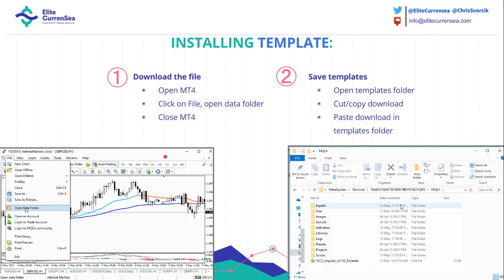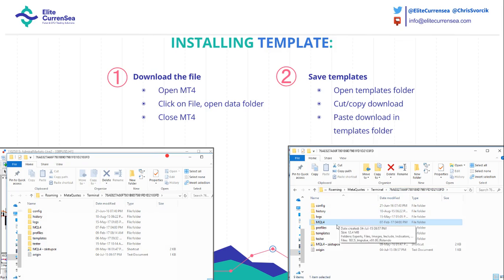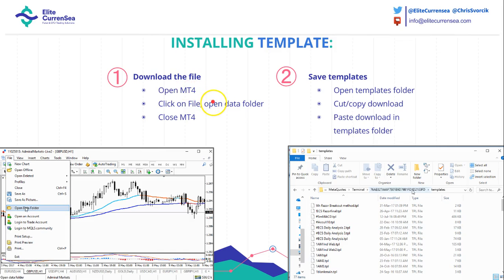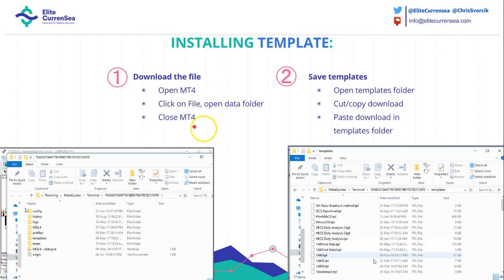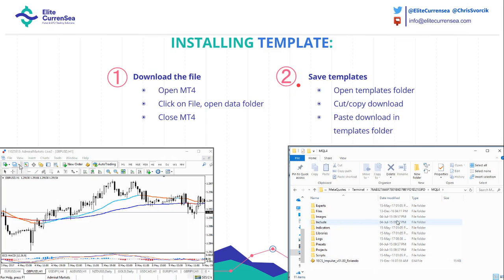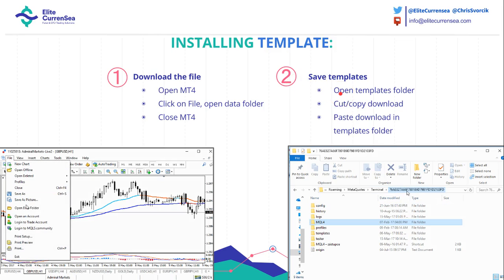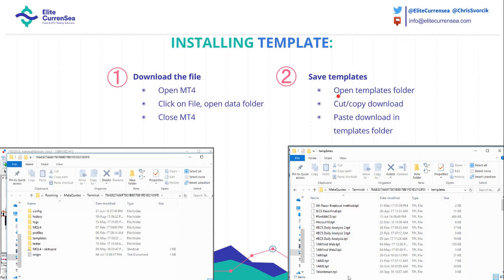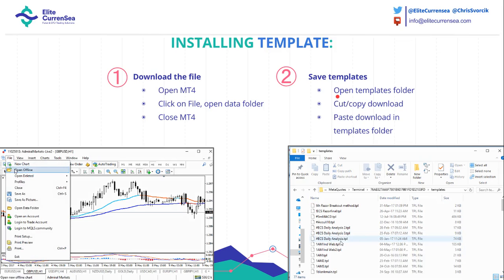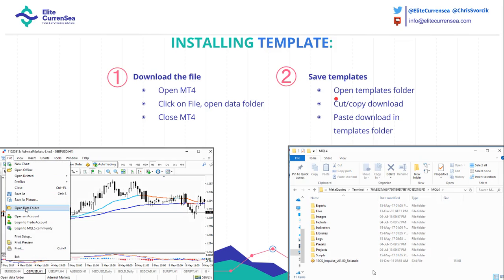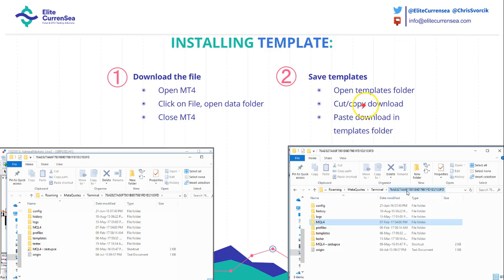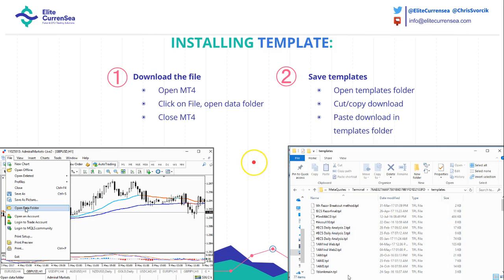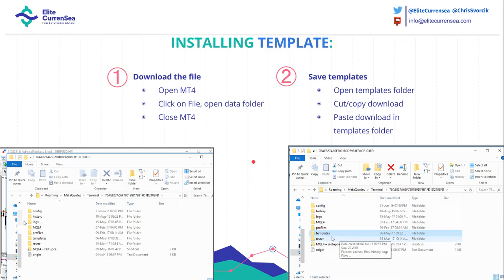With templates, it's pretty much the same process. You download the file, open MT4, click on Open Data Folder, and close MT4. Then instead of saving to the Scripts folder, you save the template. You open the Templates folder — that's a small difference. You don't have to go to MQL4; the Templates folder is on the same level as MQL4. Copy the download and paste it into the Templates folder. Two animated images here show you how to do that.